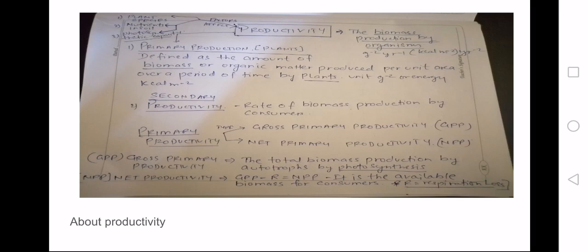Then comes net primary productivity. Now this is the productivity which is available for the consumers, the biomass which they are going to feed upon. So NPP is actually going to be devoid of the respiration, so GPP minus R equals NPP. Here R is the respiration.